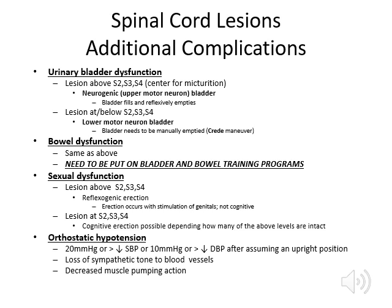If the lesion is at S2, 3, and 4 or below, then the patient has a lower motor neuron bladder — the bladder doesn't empty unless manually emptied or catheterized. That's a lower motor neuron bladder versus an upper motor neuron bladder.